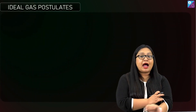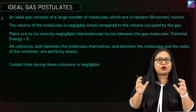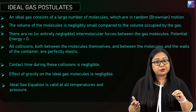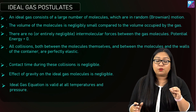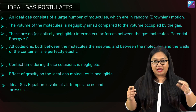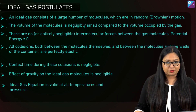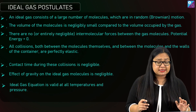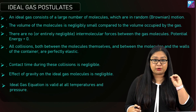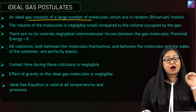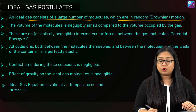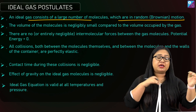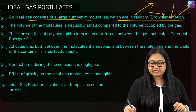Now let's get to ideal gas. Realistically, gases behave differently, but we are going to look at how the ideal gas behaves first, and after that we will go to the realistic scenario. There are seven postulates of ideal gas. First: an ideal gas consists of a large number of molecules which are in random Brownian motion, moving at high speed in all directions. The net momentum of the gas molecules is zero.